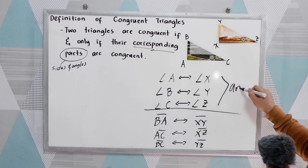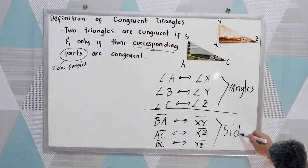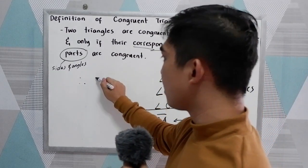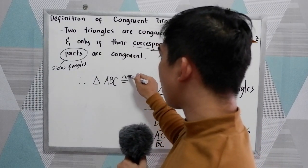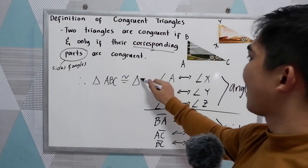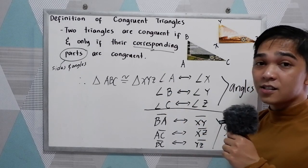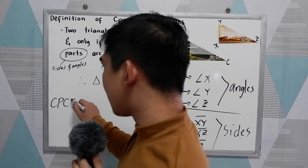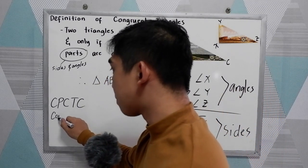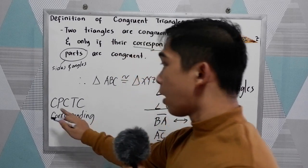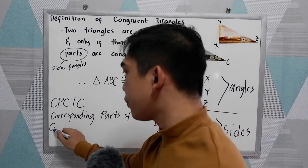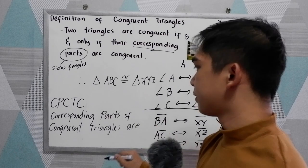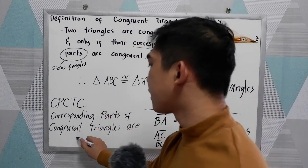So we have our angles and our sides. If that is the case, we now conclude that triangle ABC is congruent to triangle XYZ. That is the congruent triangle and its definition. You will also encounter CPCTC, which means corresponding parts of congruent triangles are congruent.